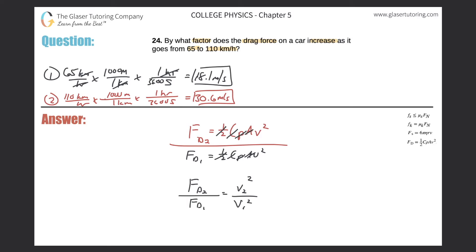So now all I have to do is just plug these in. So f d2 over f d1 is equal to 30.6 squared over 18.1 squared. And let's see what that works out to be. So we have 30.6 squared divided by 18.1 squared. And it works out to be 2.86. 2.86 times. So it's just a simple ratio.